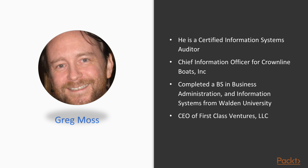Greg Moss has been a business and information systems consultant for over 25 years. Greg is a certified information systems auditor, a certified Six Sigma Black Belt, and was the chief information officer for Crownline Boats Incorporated. Greg completed a BS in business administration and information systems from Walden University. Greg is the CEO of First Class Ventures LLC, the owner of FirstClassComputerConsulting.com and OdooClass.com.